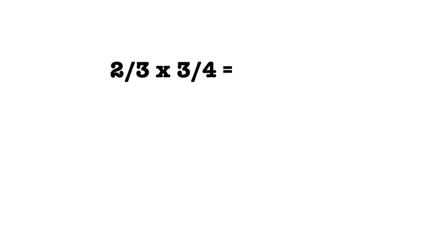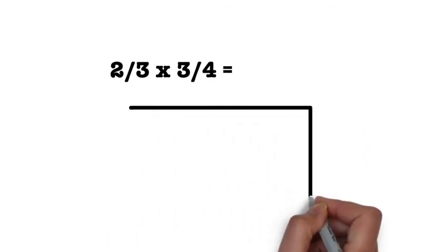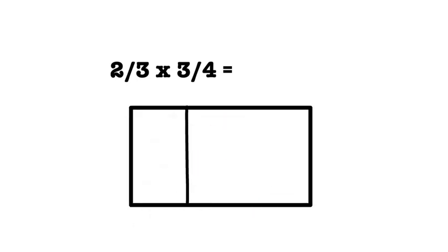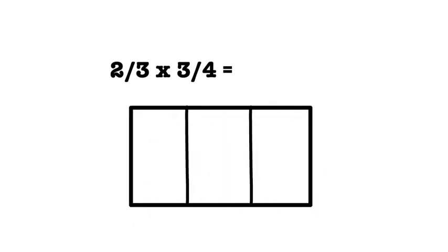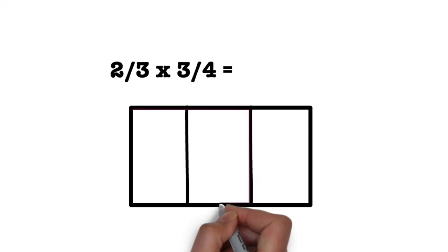This time, our denominator is three, which means that we need to vertically divide the rectangle into three equal pieces. Since the fraction is two-thirds, we will shade in two of the three pieces.